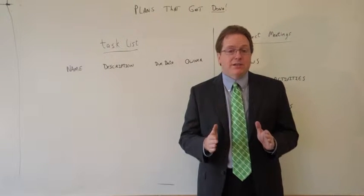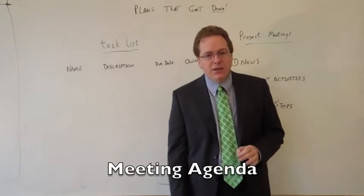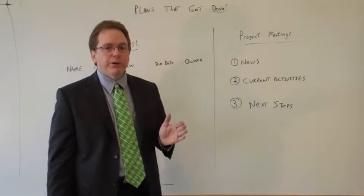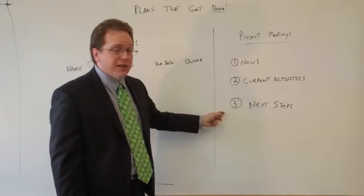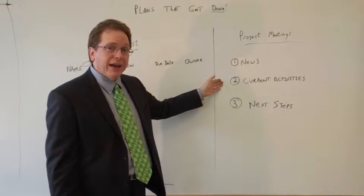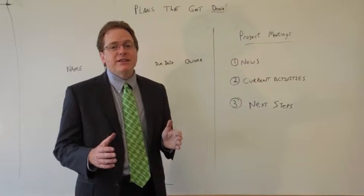This one task list gives you the outline for the project meeting agenda. Now the meeting agenda is simple too. This is a piece of paper that's broken up into three sections. First, project news. Second, current activities. And third, next steps. So let's break these down.